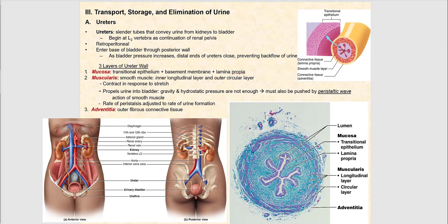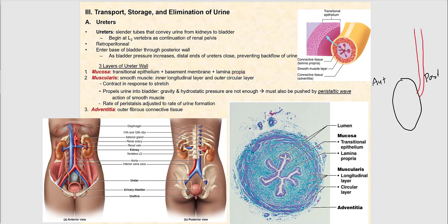From the kidney, urine drains into the ureters — two slender tubes, one on the right and one on the left, that convey urine from the kidneys to the urinary bladder. The ureter begins roughly at the L2 vertebra as a continuation of the renal pelvis, lies retroperitoneal behind the peritoneum, and enters the base of the urinary bladder through its posterior wall.